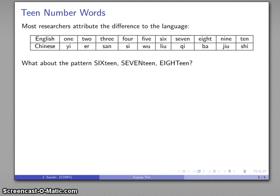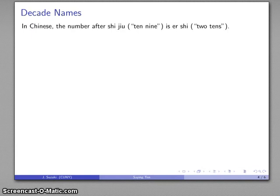And then once we get there, there's a problem. Because we've run into what are called the decade names. So in Chinese, the number after shi jiu is er shi, two tens. And this is what we call 20 in English. And the tens in English and in other languages are their own set of number words that we call the decade names.